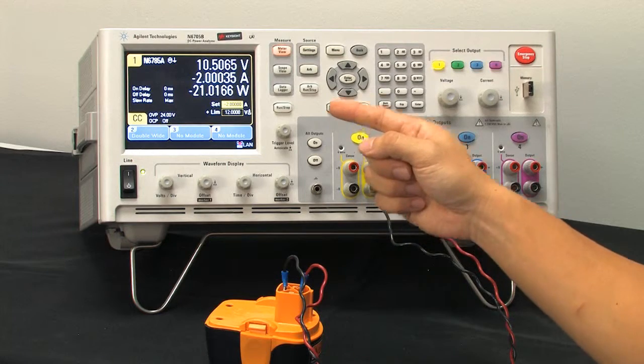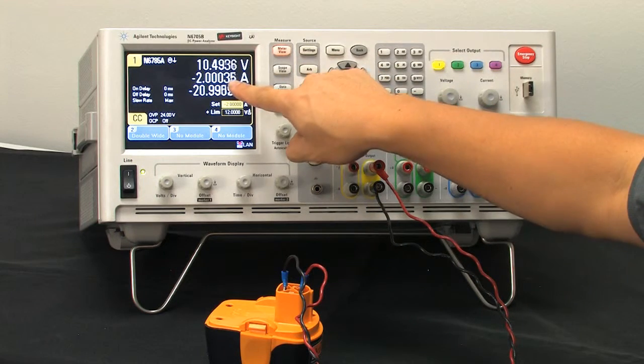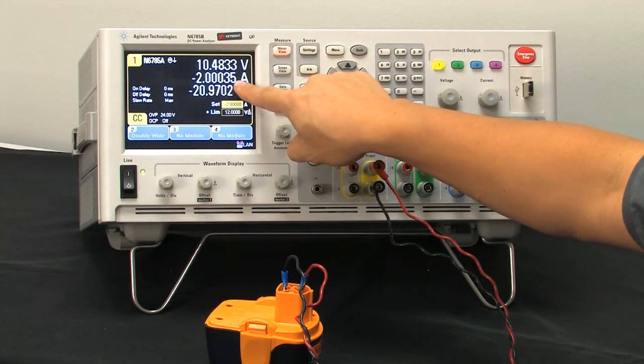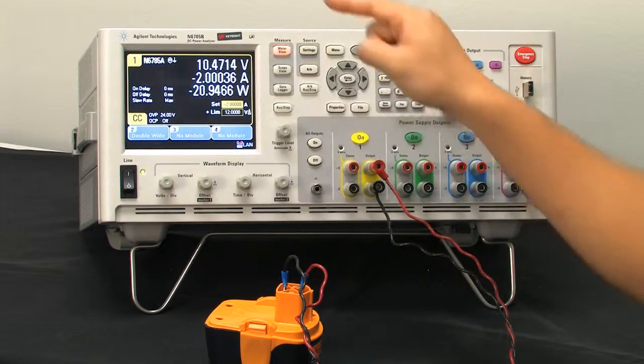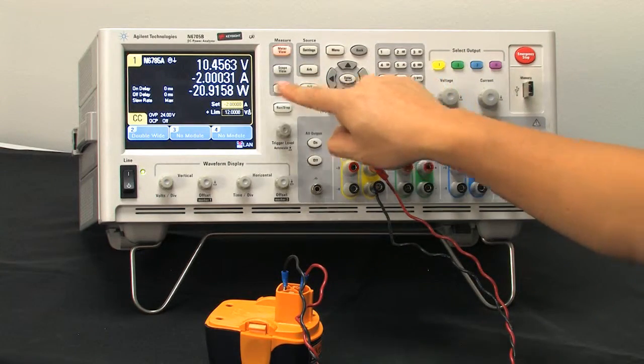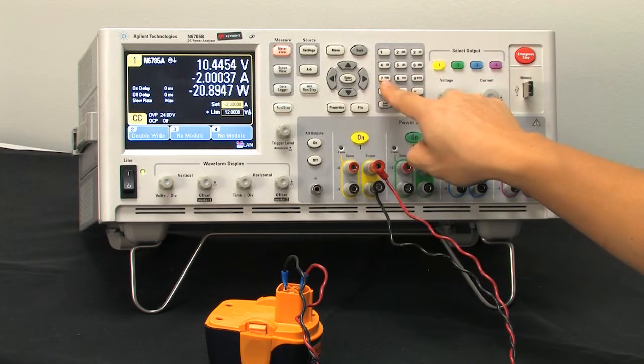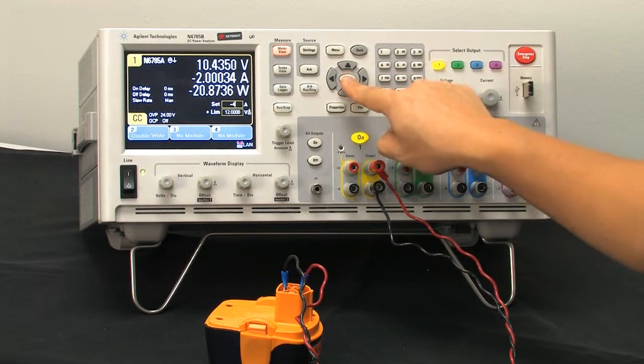If we want to speed this up, what we can do is we can set a different, a higher current value, and this will actually make things much faster. So instead of negative 2 amps, let's go ahead and push in negative 4.